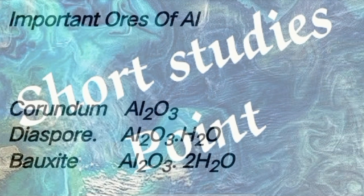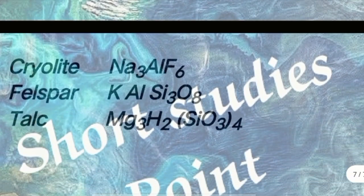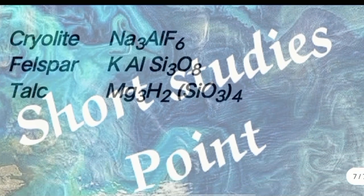Continued ores of aluminum: Bauxite (Al2O3·2H2O), Cryolite (Na3AlF6), Feldspar (KAlSi3O8), Talc (Mg3(OH)2Si4O10).